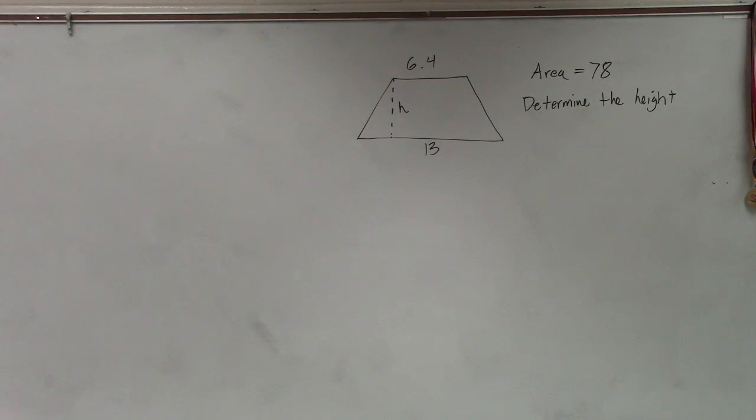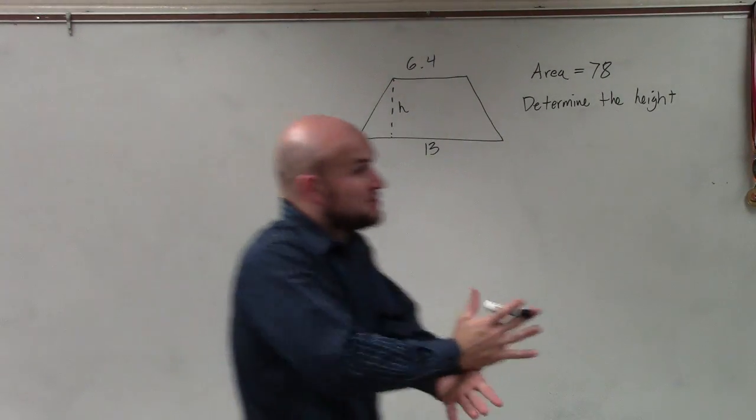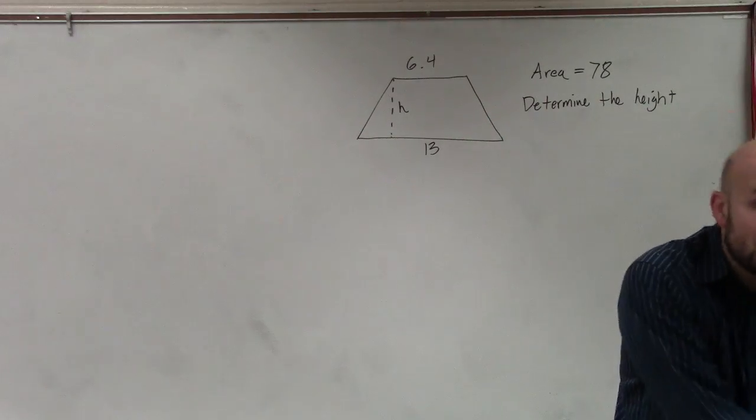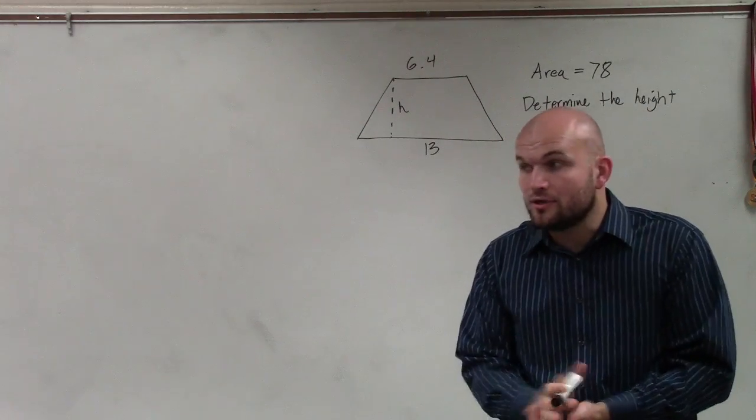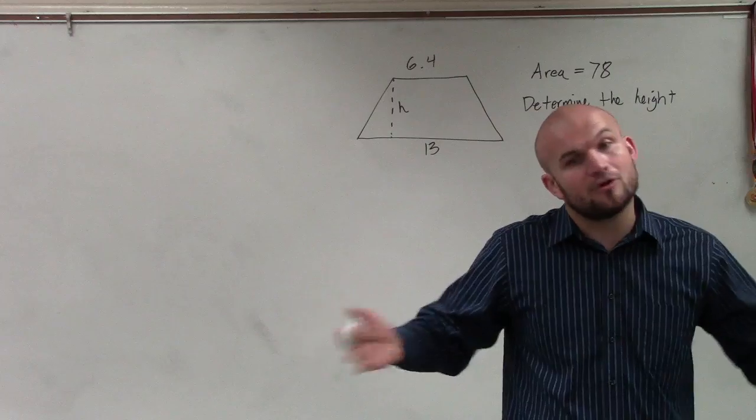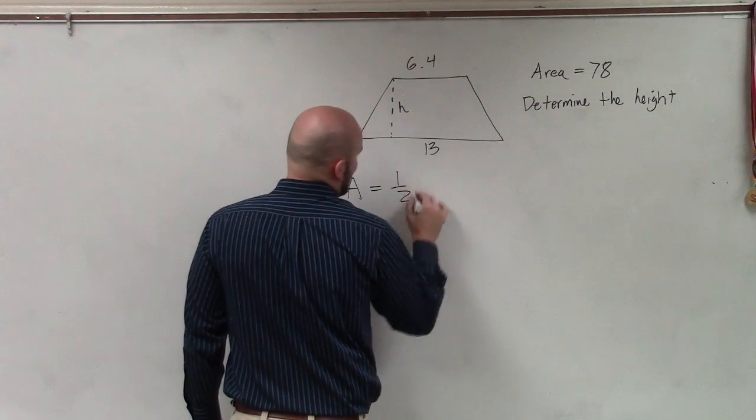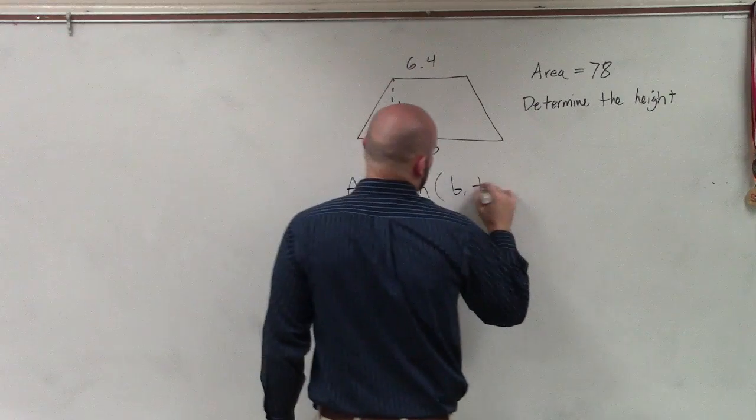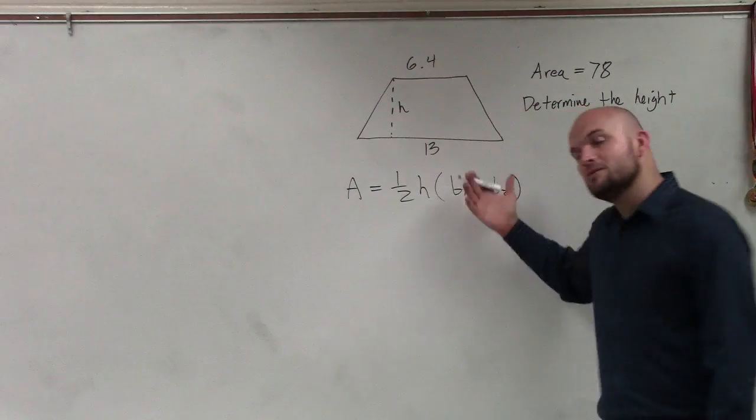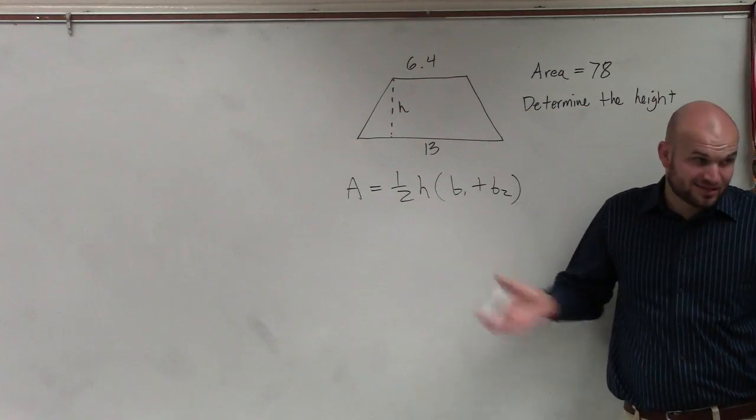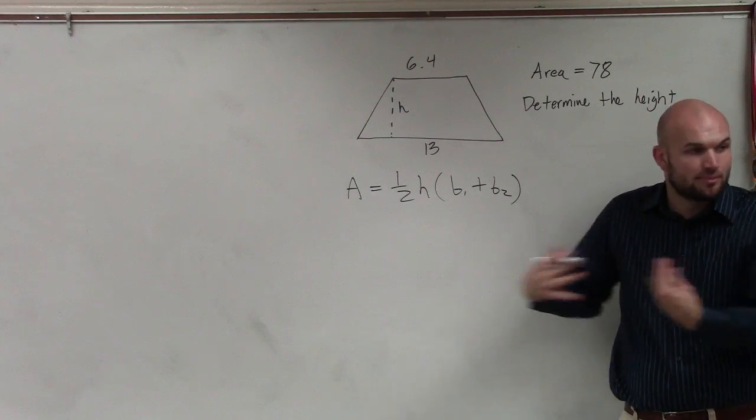As I mentioned, ladies and gentlemen, any time you see a trapezoid and they're talking about the area, write down the formula. Area of the trapezoid equals one-half times height times base 1 plus base 2. Notice base 1 and base 2 are inside the parentheses, so we have to add them up before we apply multiplication.